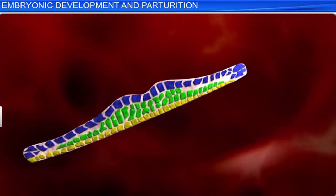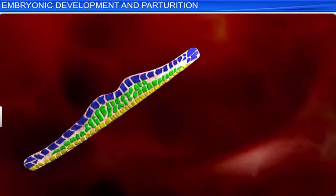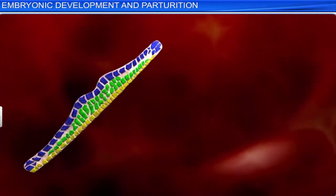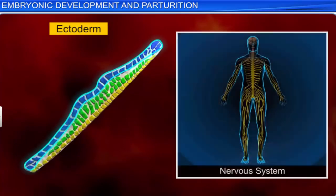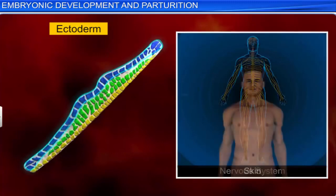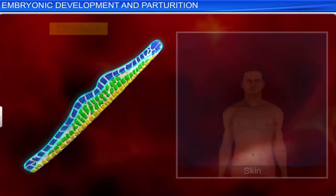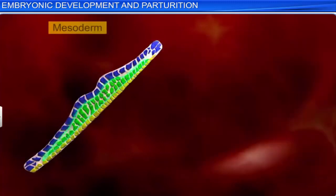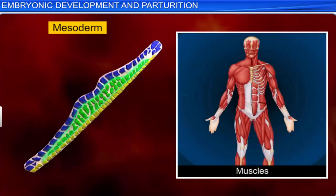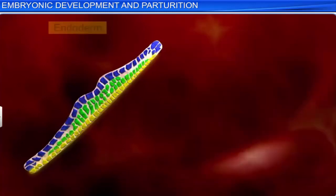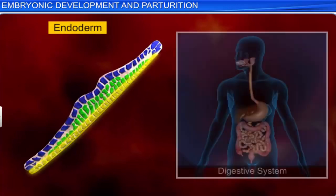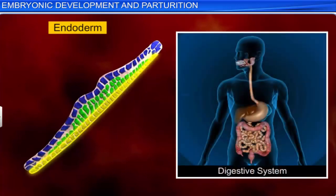The term germ layer indicates that each of the layers gives rise to tissues. The ectoderm, for instance, gives rise to the nervous system and the skin. Whereas the mesoderm develops into muscles and organs such as the heart and kidneys. While the endoderm gives rise to the entire digestive system.